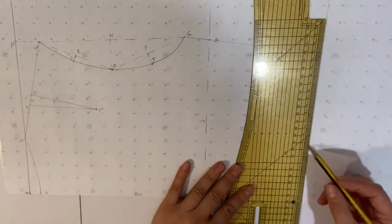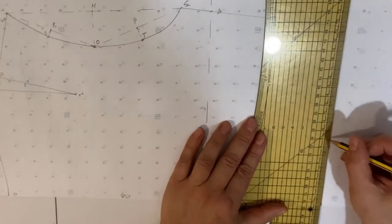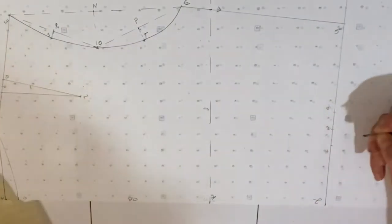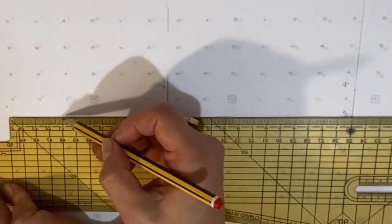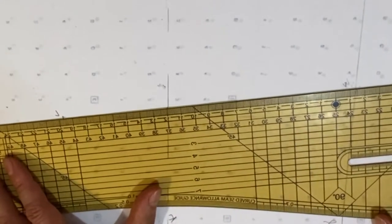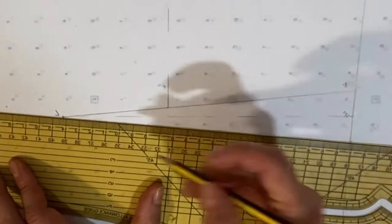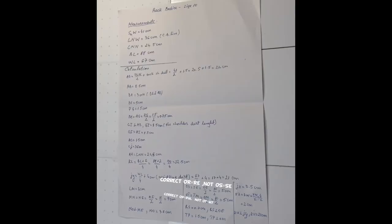Now I will add the waistline dart. From J measure 7.5 cm and mark X. From X measure 4 cm for the dart and mark W. Half of XW is 2 cm; mark Z. From Z draw a perpendicular line to the J-Y vertical line of 21 cm in length and mark V. Join V with W and V with X — and here is the dart. Below are the dart calculations and all measurements and calculations for the back bodice size 10.